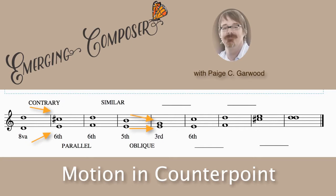To review: contrary — two voices move in opposite directions. Parallel — two voices move in the same direction, starting and ending on the same intervallic distance; in our case, a sixth to a sixth. Similar — two voices moving in the same direction but starting at one interval and going to a different one; we went from a sixth to a fifth, both voices moving down. Oblique — one voice stays the same and the other voice moves; we went from a fifth to a third, the E stayed the same in the bottom voice and the top voice moved downward.